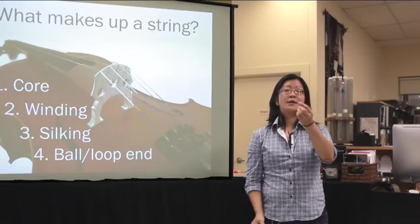And the last part is the ball end or the loop end. So this little tiny round guy here is called the ball end. Most of our orchestral strings will have ball ends.